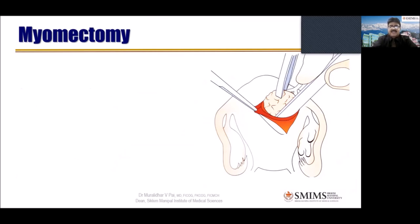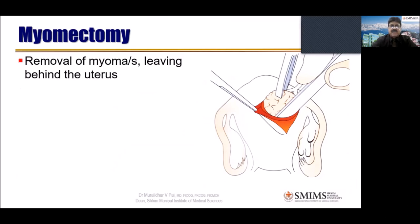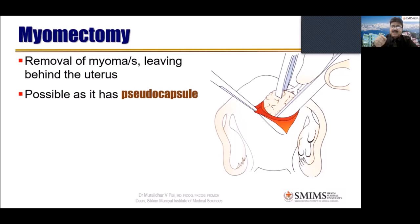Myomectomy is probably the first surgery a postgraduate will be given in training, because there are not many complex steps: open the abdomen, identify the fibroid. Because the fibroid has a nice pseudo-capsule, it is very easy to tackle. Removal of myomas from the living uterus is called myomectomy. It is possible because of the pseudo-capsule — you incise the capsule and nicely enucleate it, like scooping a Coorg orange that has a loose skin. If you are in the right plane of cleavage, it comes out beautifully even without much bleeding.